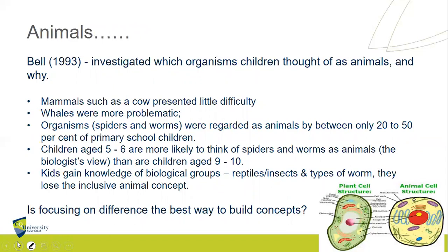Bell investigated which organisms children thought of as animals and why. Cows were really no problem. Whales were more problematic — 'no, they're fish, and fish are not animals.' Spiders and worms were regarded as animals by only about 20 to 50 percent of primary school children. Children aged five to six are more likely to think of spiders and worms as animals than children aged nine and ten. So at five and six we think they're animals, but by age nine and ten the majority of children think they're not. There's been some unlearning here, or some teaching of misconceptions. Kids gain knowledge of biological groups — reptiles, insects, types of worm — and they lose the inclusive animal concept.